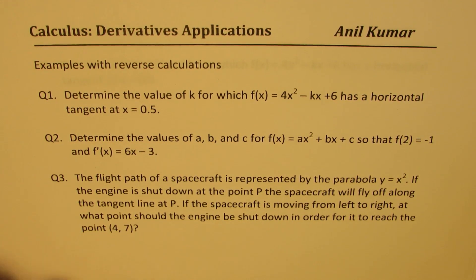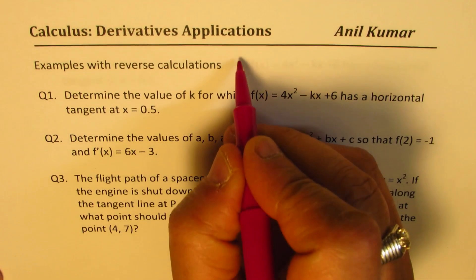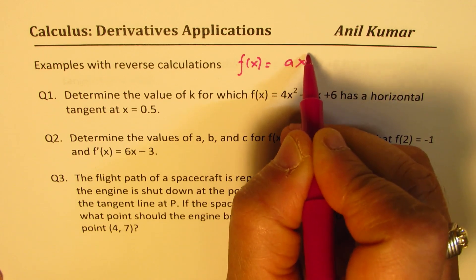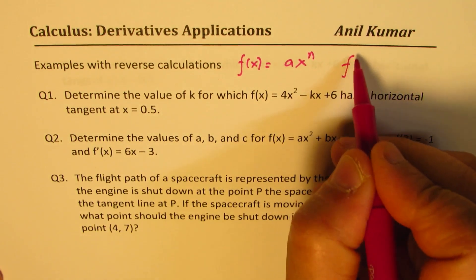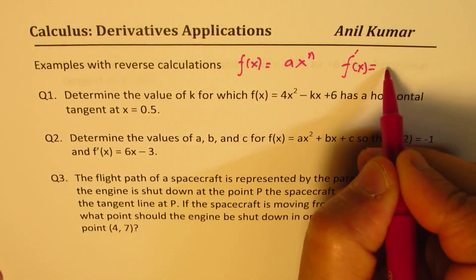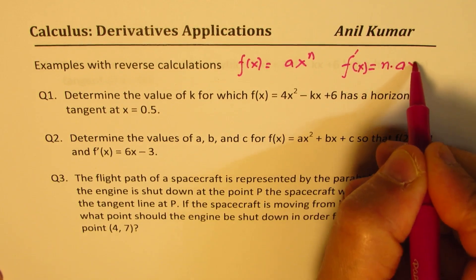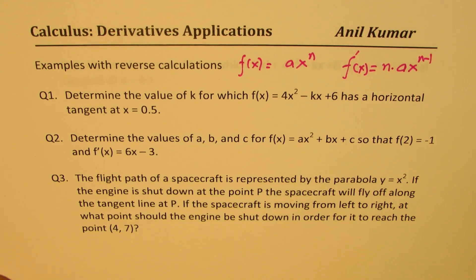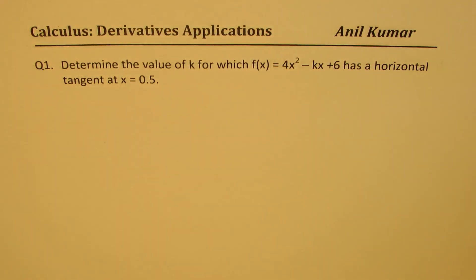What you have learned is very simple: if a function f of x is a times x to the power of n, then the derivative f'(x) is n times a times x to the power of n minus 1. That's the only rule learned so far, and using this we should be able to answer all three questions. Let's move on and take the very first question.